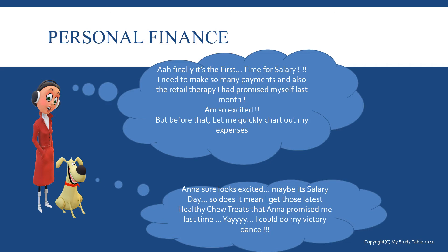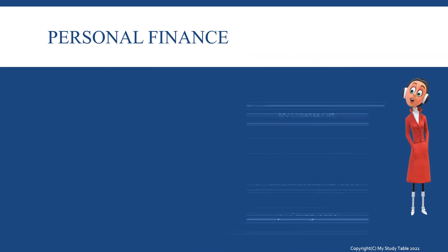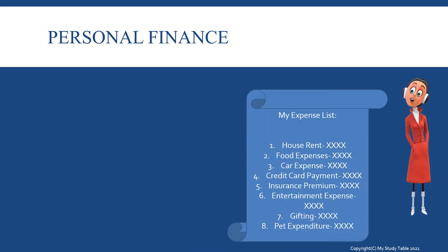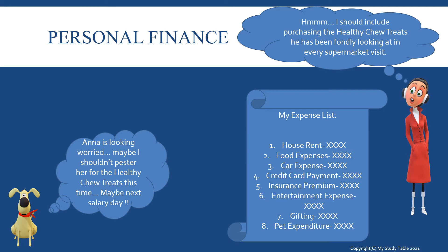Her pet also has certain expectations from her and is looking just as excited. Let's go through the expense list that Anna has created. It includes house rent, food expenses, car expense, credit card payment, insurance premium, entertainment expense, gifting and pet expenditure. She does not forget to include purchasing the healthy treats that her pet has been fondly looking at on every supermarket visit.